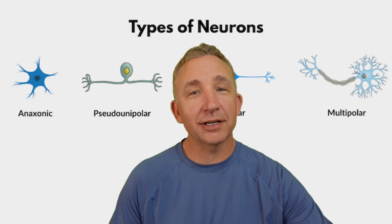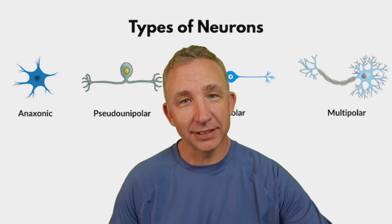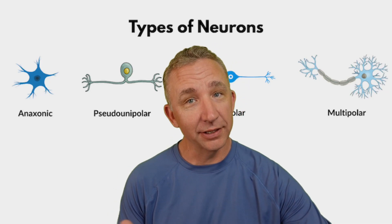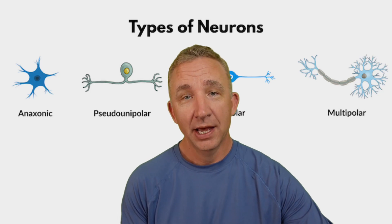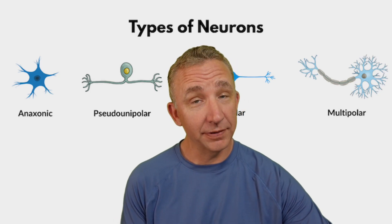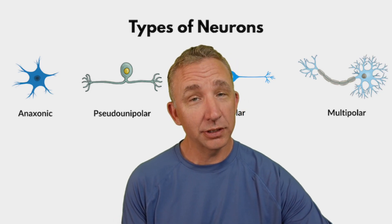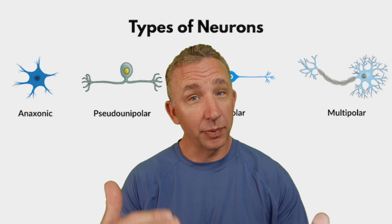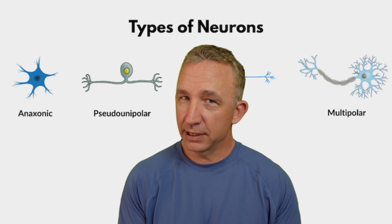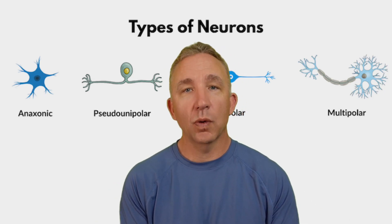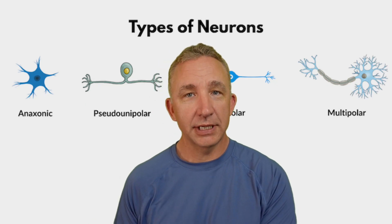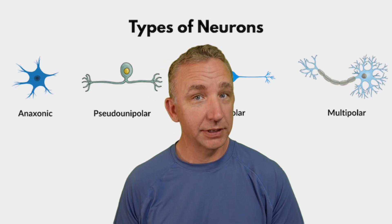Time to get nervous. We're talking about the nervous system and the different types of cells that we see within the nervous system. In a previous video, I covered some of the major definitions that you should understand, along with the breakdown or hierarchy of the nervous system. Before you get into this video, watch those as well to start the progression of understanding how the nervous system works.